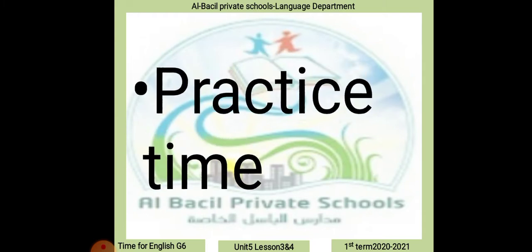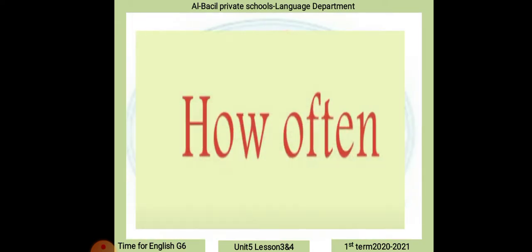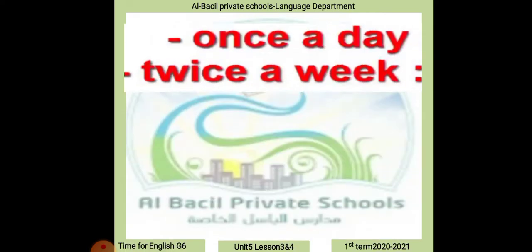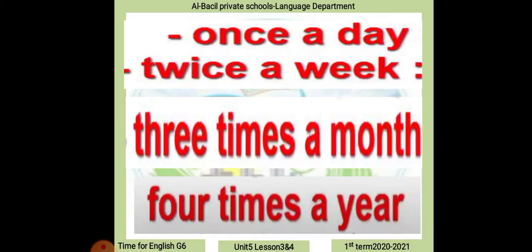Now, with practice time. Grammar: How often? 'How often' means كم عدد المرات — it is used to ask a question. The answers use words like: once a day, twice a week, three times a month, four times a year. When a sentence ends with one of these frequency expressions, we form a question beginning with 'how often.' The tense used is the present simple.